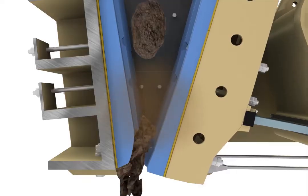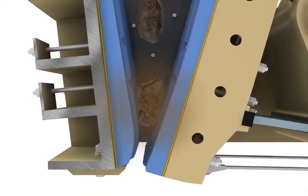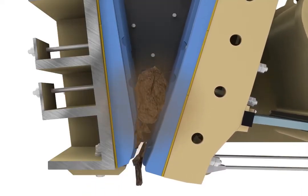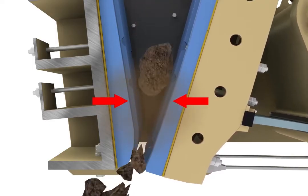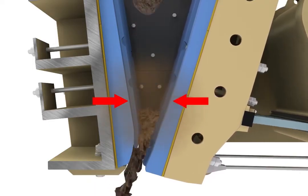Material enters the crusher through the opening between the top of the two crushing jaws. When the swing jaw moves towards the stationary jaw, large forces are exerted on the material wedged between the jaws.